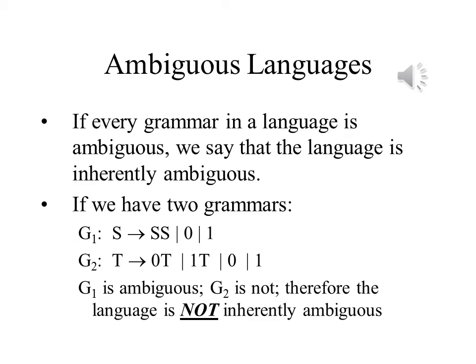In this example, we have two different grammars for the same language. However, the first grammar, g1, is ambiguous. We will see why in one moment. But the second grammar, g2, is not ambiguous. We will see shortly that there is only one parse tree that we can get for a particular string of symbols. Since there is an unambiguous grammar for the language, the language is not ambiguous.